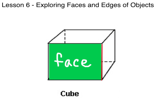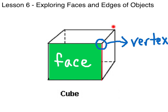Where two or more edges meet, we have what we call a vertex. Actually, it's where three or more edges meet that we call a vertex. So, here we have one, two, three edges meeting at a point that we call a vertex. Those are some terms we need to know about three-dimensional objects: faces, edges, and vertices.